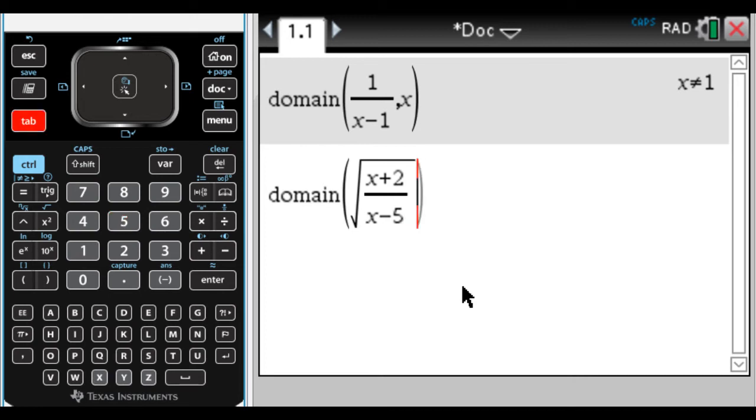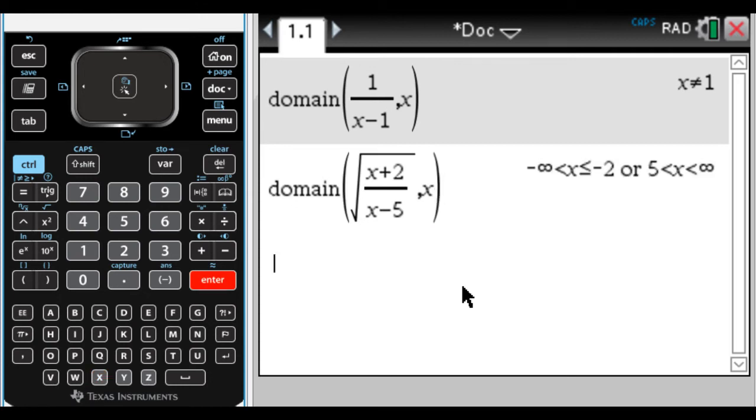So remember, you have to tell it the variable. So comma x. And if I press Enter, it gives me x is less than or equal to negative 2, and x is greater than 5. So it does a really good job with these.